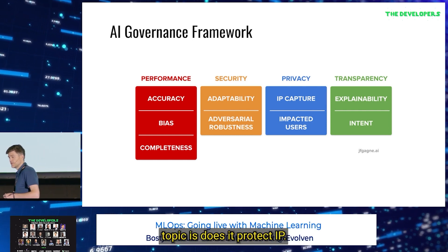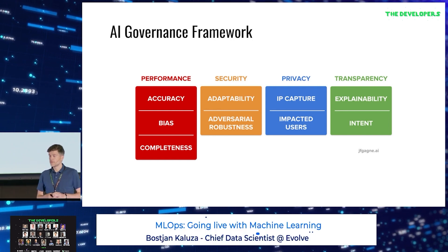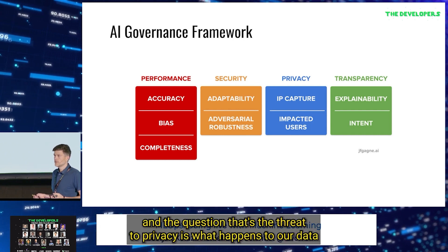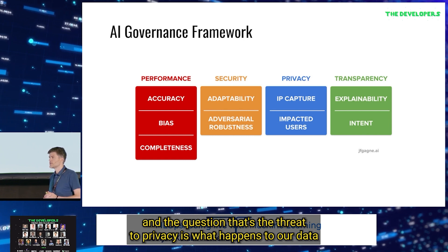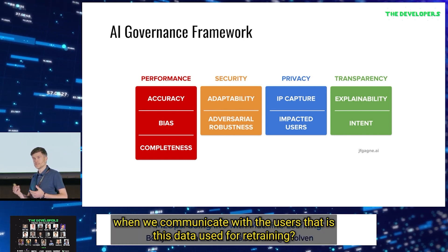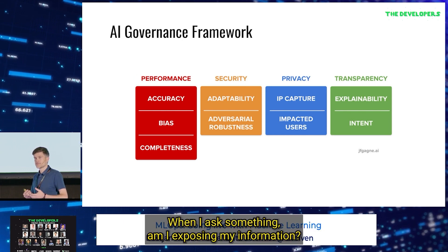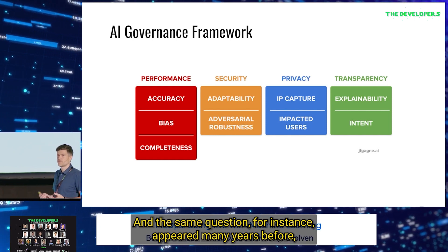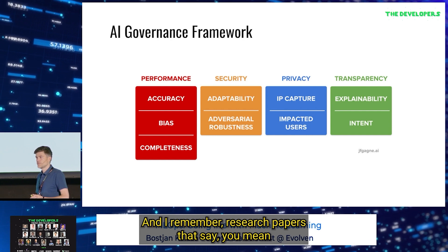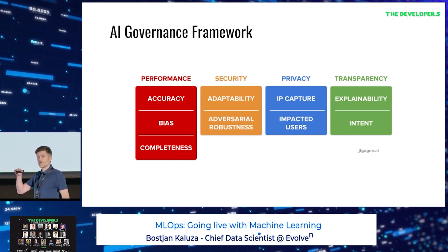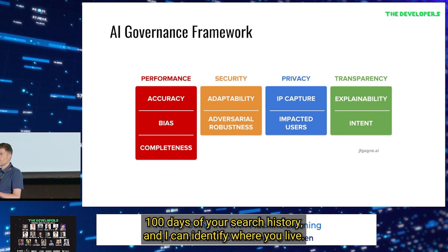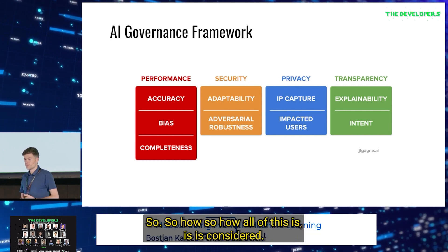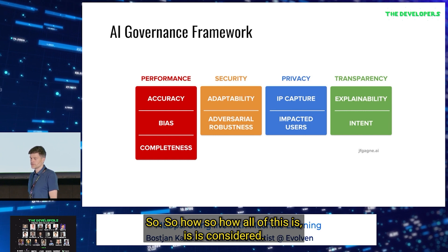The next important topic is: does it protect IP, and how are users impacted? Now we all communicate with ChatGPT, and the question related to privacy is: what happens to our data when we communicate with it? Is this data used for retraining? When I ask something, am I exposing my information? The same question appeared years before when Google was introduced. I remember research papers that said: give me 100 days of your search history and I can identify where you live, what are your health problems, what you're thinking about, and at which point in life you are.